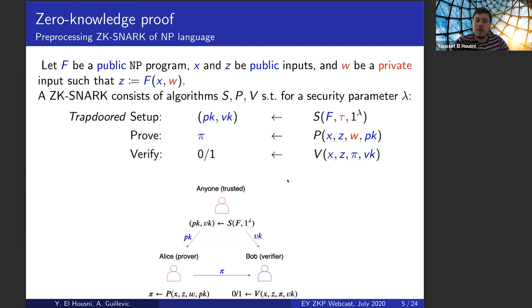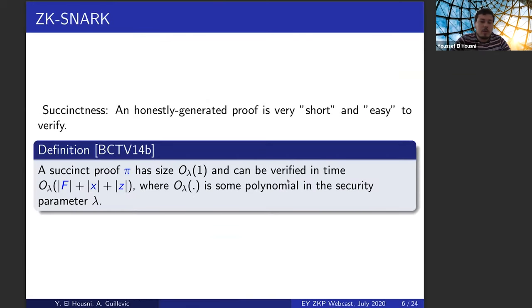The trusted setup can be generated by anyone as long as it is a trustworthy party. The prover by Alice, the verifier by the verifier. So we said that the key property in those ZK-SNARKs is the S, which stands for succinctness. So informally, an honestly generated proof is very short and easy to verify. So there are many definitions of this succinctness, but here we take the one from BCTV. So the proof is constant size with respect to some security parameter and the verification is also constant with respect to the size of the inputs.